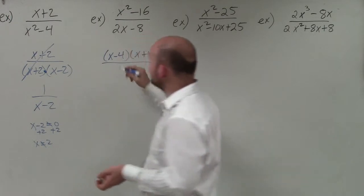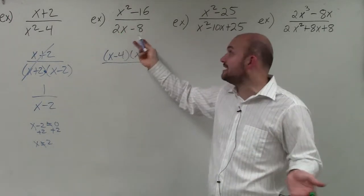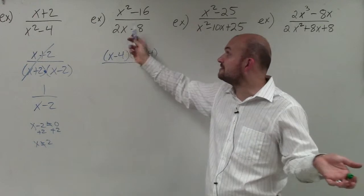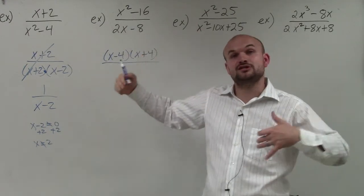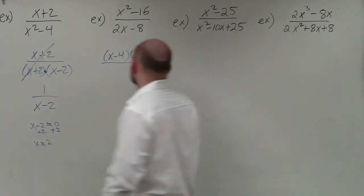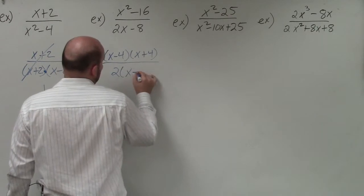When looking at my denominator, though, I don't have a difference of two squares. But I do see that I can factor out using the GCF. 2x and negative 8 both share a 2. So I'm going to divide out the 2. And when I do that, I'm left with an x minus 4.